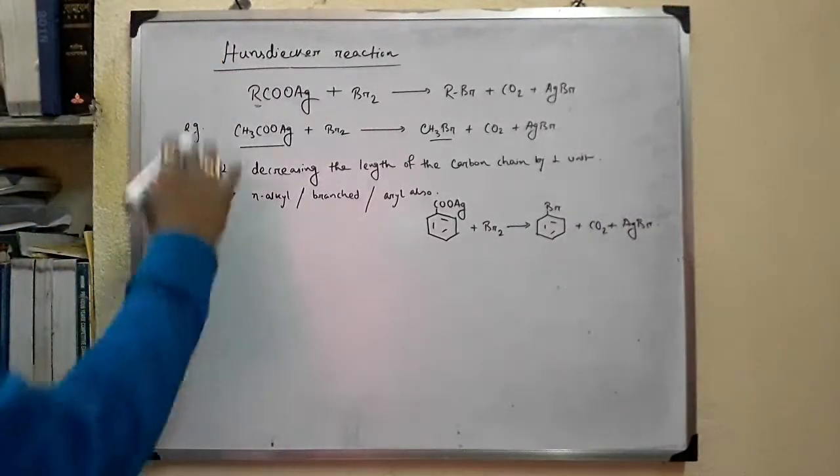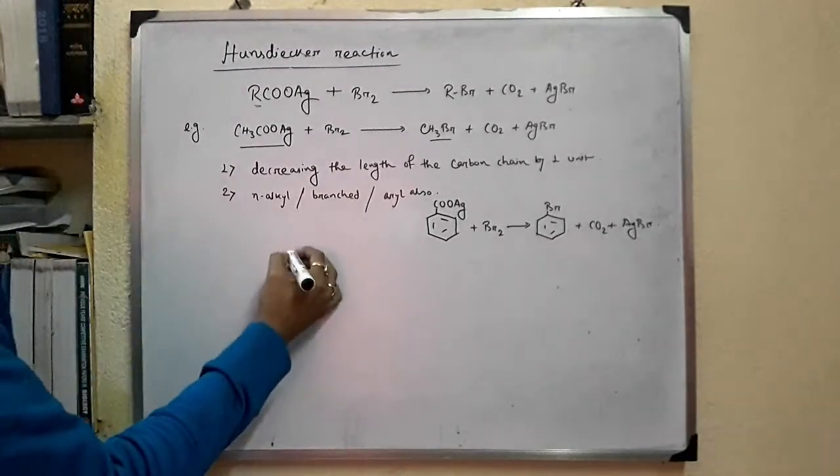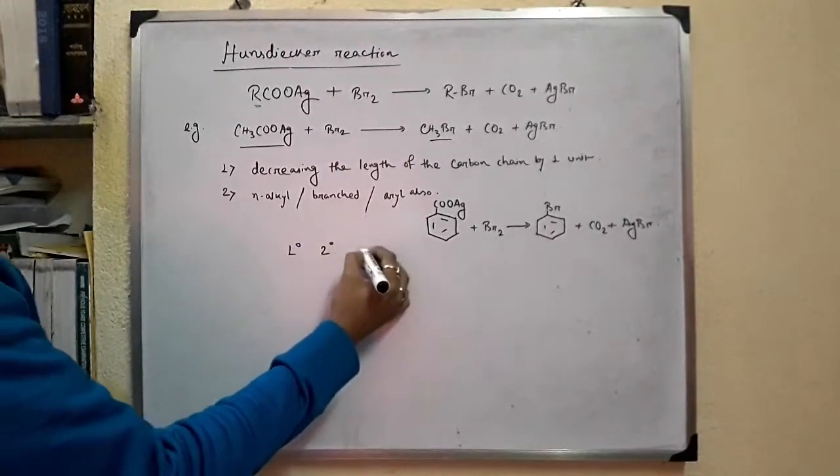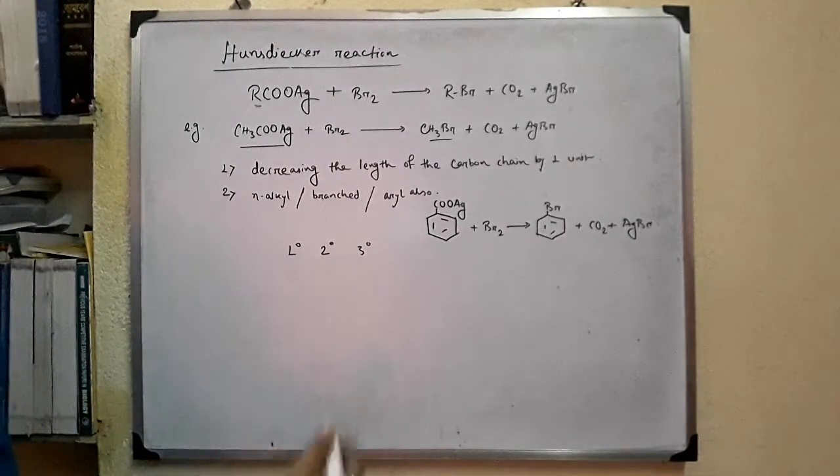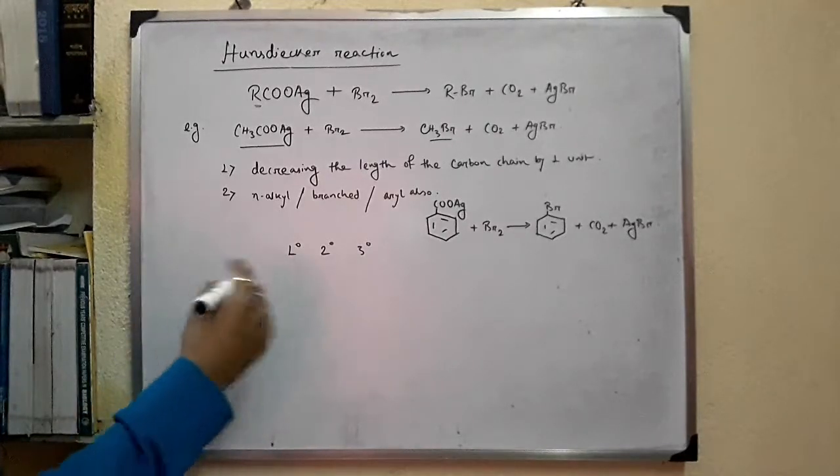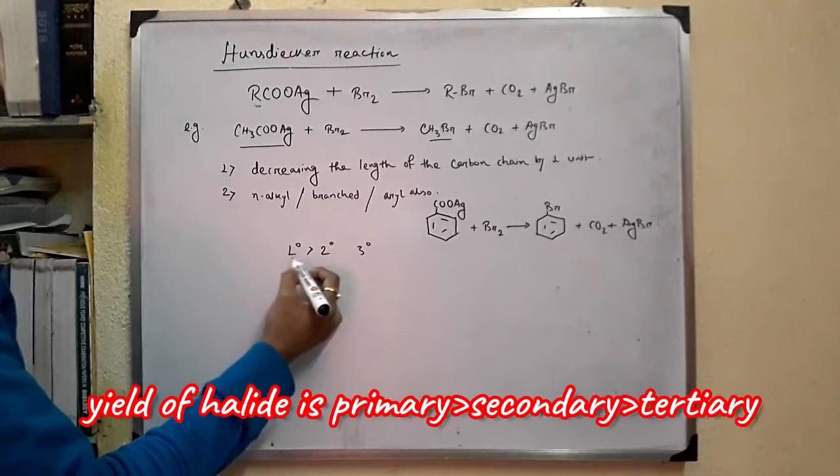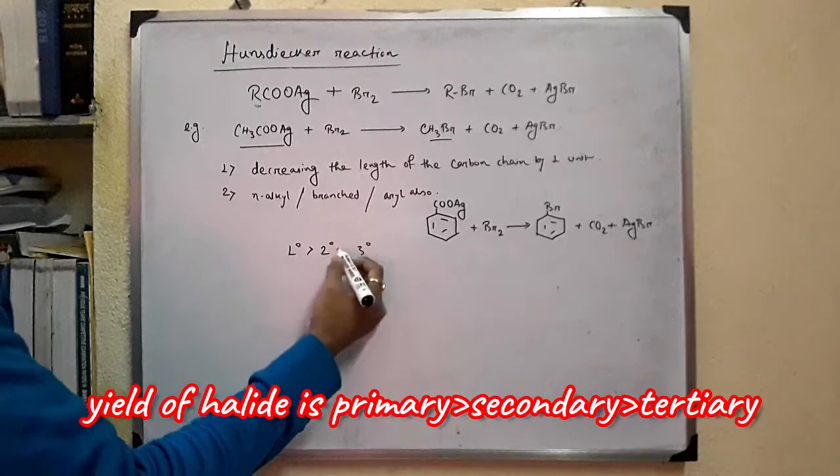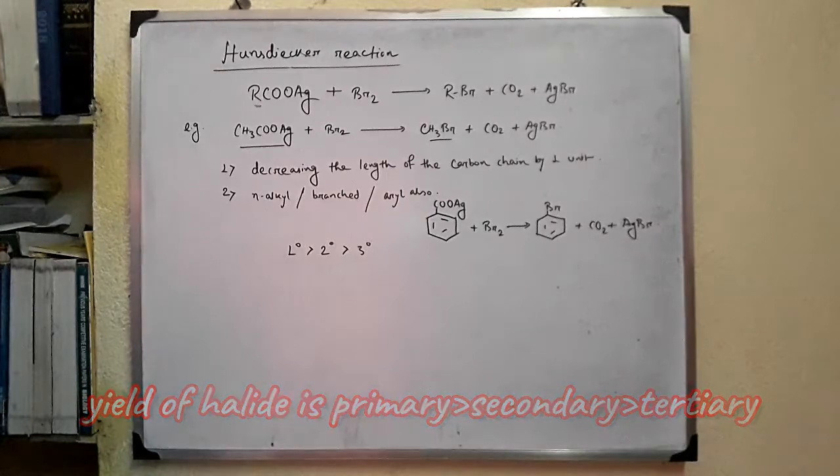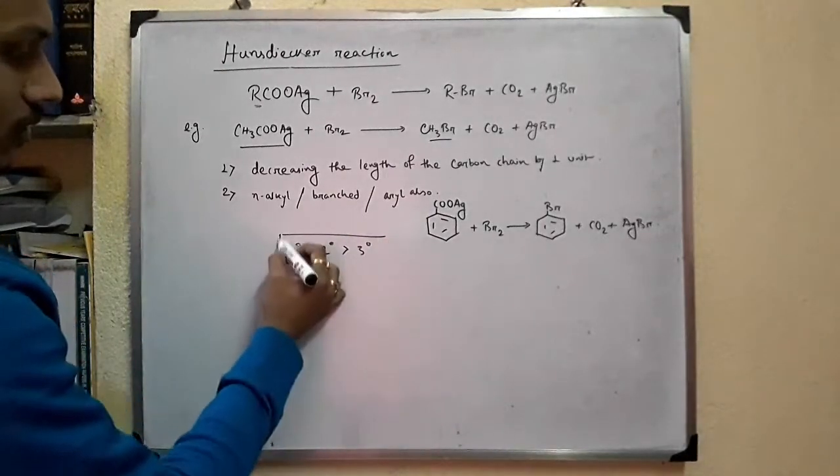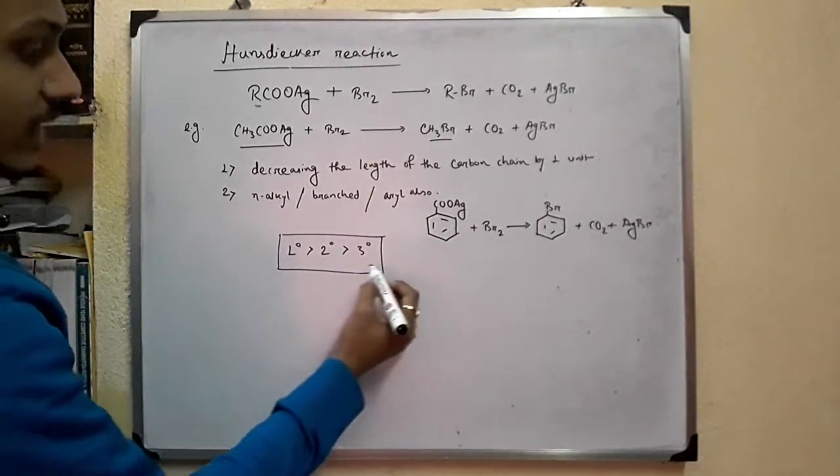And using this reaction, primary, secondary, tertiary alkyl halides can be produced. And the order of the yield: primary is greater than secondary and secondary is greater than tertiary. So, this is the order of the yield of alkyl halides.